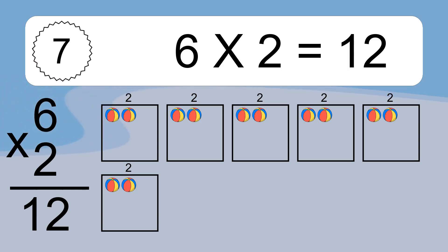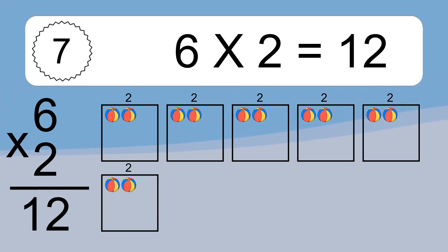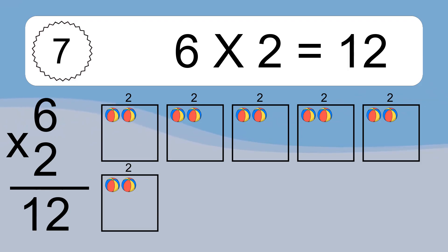We have 6 boxes, and each box has 2 colorful balls inside. If you count all the balls in all the boxes together, you will have 6 times 2 balls. This equals 12 balls.